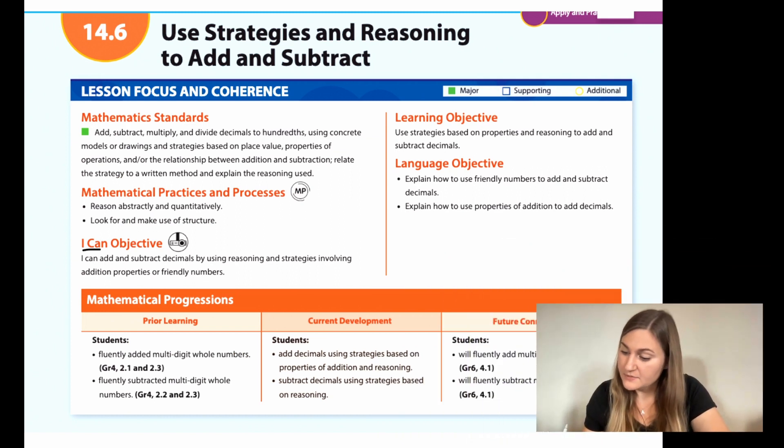I'm going to start off by going over the iKid objective. It says I can add and subtract decimals by using reasoning and strategies involving addition properties or friendly numbers. The learning objective is to use strategies based on properties and reasonings to add and subtract decimals. The prior learning is that students fluently added multi-digit whole numbers and they fluently subtracted multi-digit whole numbers.